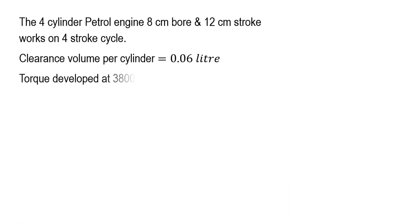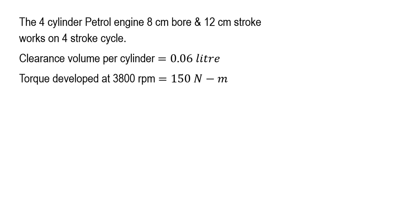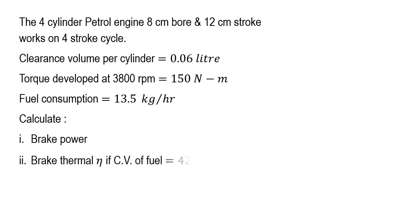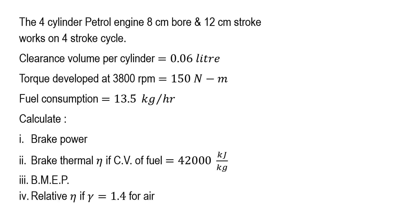Now let us see the problem statement. A 4-cylinder petrol engine having 8 cm bore and 12 cm stroke works on a 4-stroke cycle. Clearance volume per cylinder is 0.06 liters. Torque developed at 3800 rpm is 150 Nm. Fuel consumption is 13.5 kg per hour. We have to calculate brake power, brake thermal efficiency (calorific value of fuel is 42,000 kJ/kg), brake mean effective pressure, and relative efficiency, given gamma equals 1.4 for air.